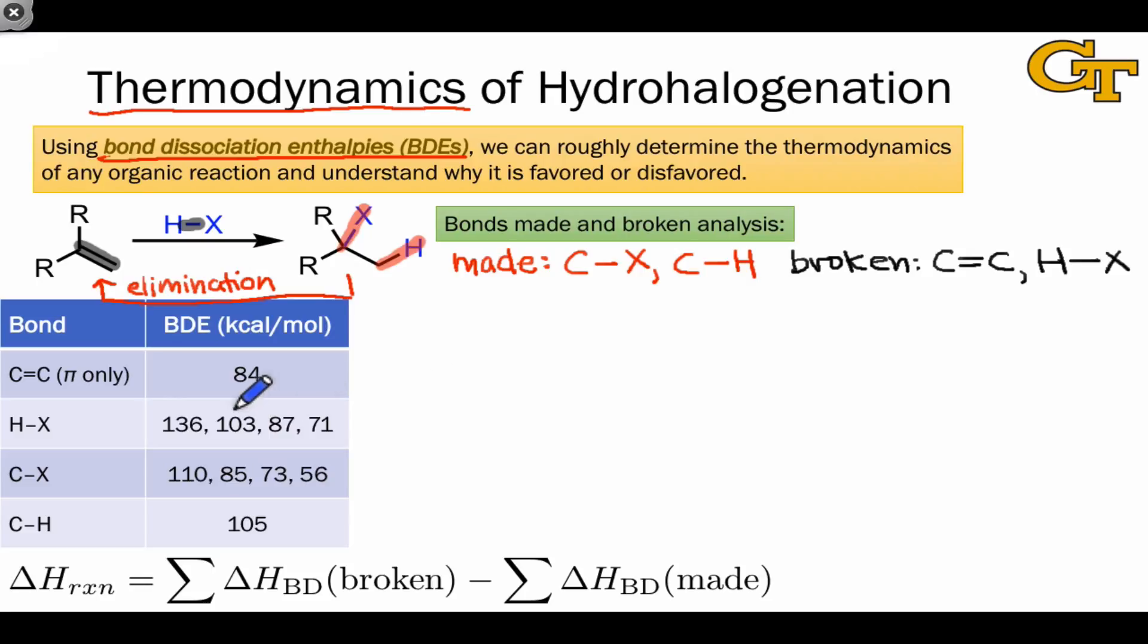Here's a table of bond dissociation energies containing bonds relevant to this reaction. For HX and CX here, we have HF, HCl, HBr, and HI, with a decrease in bond dissociation energy partly due to the size difference between the atoms that increases as we go from F to I.